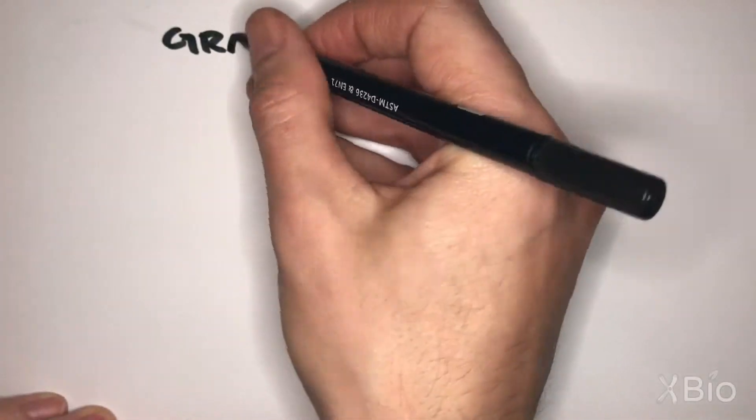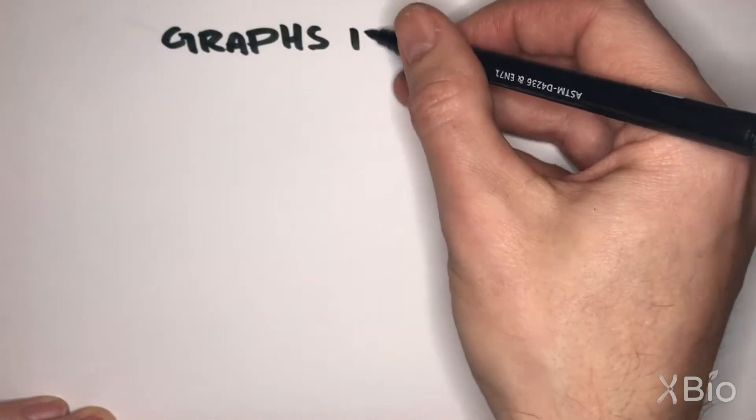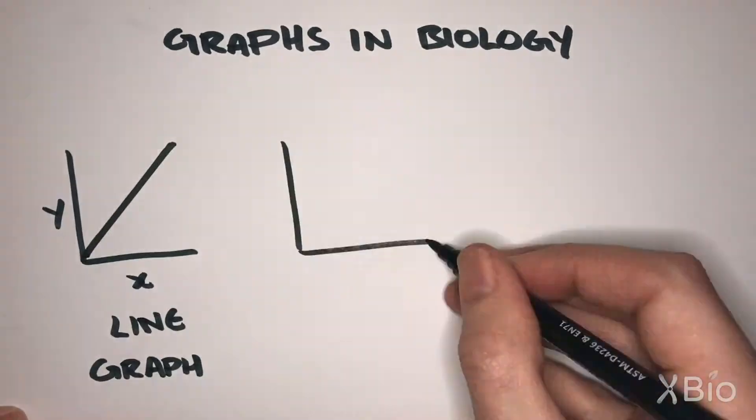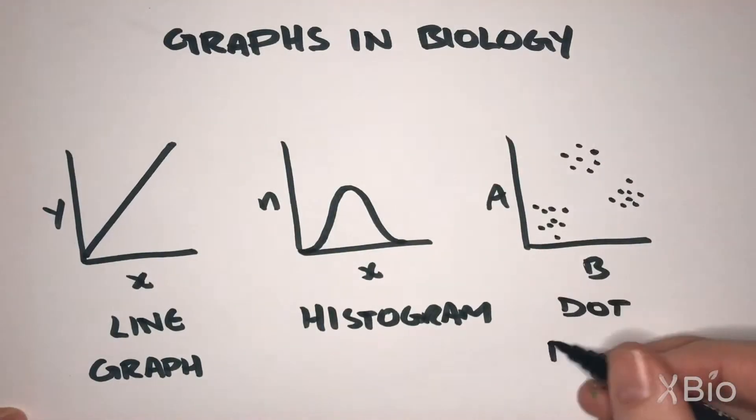To understand experimental results, it's essential to get a feel for some common graphs and what they mean. We will look at line graphs, histograms, and dot plots.